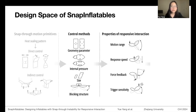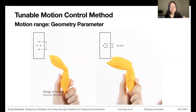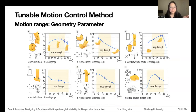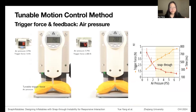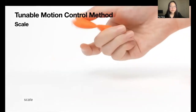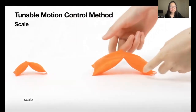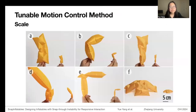Based on these motion types, we open a new design space for creating responsive interactions with inflated objects. We explore other design dimensions and form factors. The motion range of each structure can be controlled by the critical geometry parameter of heat-sealing patterns. The performance of the same structure can be adjusted by internal pressure — higher internal pressure increases stiffness, resulting in a higher trigger force and faster responsive speed. We also explored scalability from the size of a fingernail to the human body, observing similar motion effects.